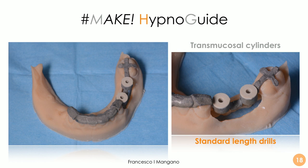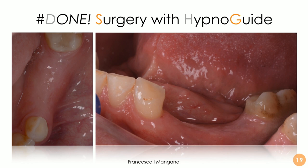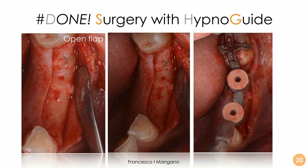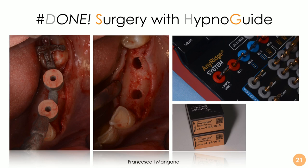The Hypno Guide allows you to work open flap with a minimally invasive approach. The cylinder also helps the surgeon keep the flap open. The advantage is that you don't need to worry about position, inclination, or depth of the implant — the guide provides all of this. These are pre-clinical images taken exactly before surgery. The surgeon opens a flap and then positions the guide, which is very stable thanks to its elegant, thin design and the porosity of the metal material.